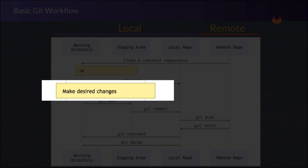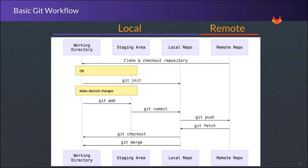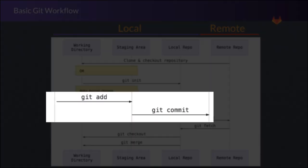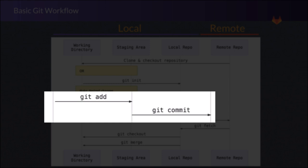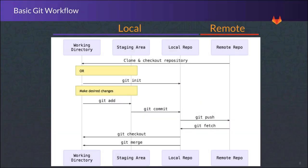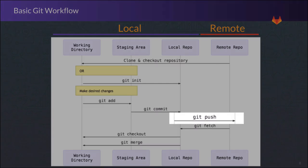We can reorganize the entire project, or just make one small spelling change. Once we're satisfied with the changes, the command git commit allows us to mark the project in its current state as a kind of snapshot in time. Then, if we want to collaborate on these changes with our team, we can send them to the remote repository by saying git push.